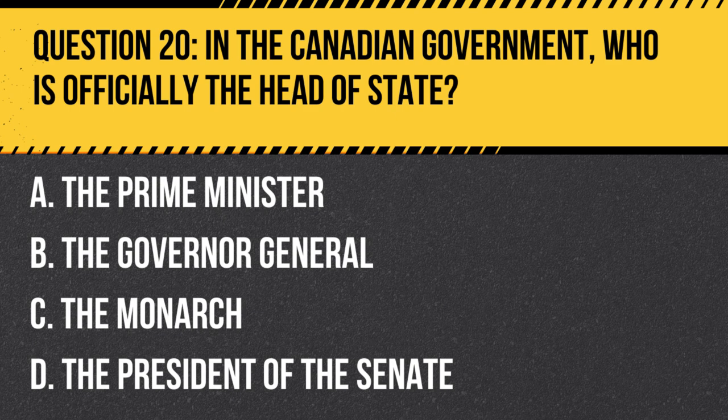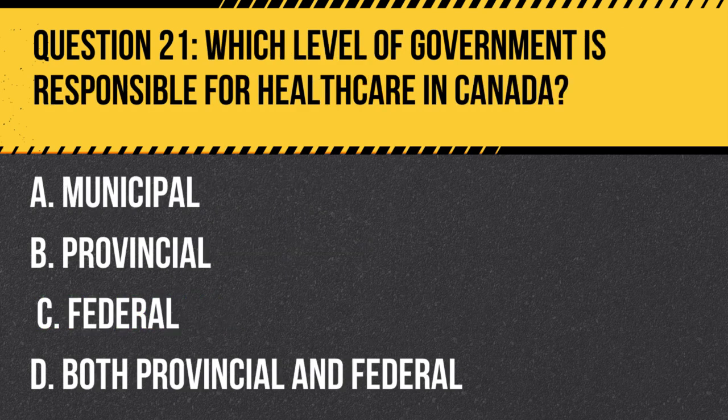Answer: C. The Monarch. Canada is a constitutional monarchy, which means the official head of state is a monarch, currently the king or queen of the United Kingdom, represented by the Governor-General at the federal level.